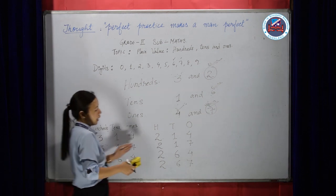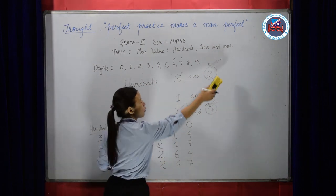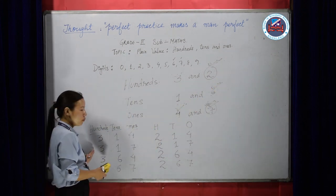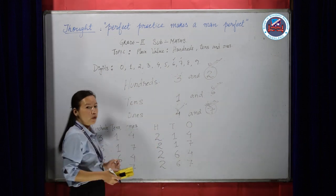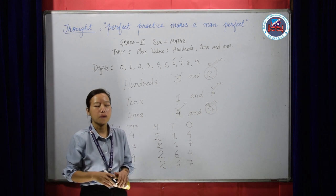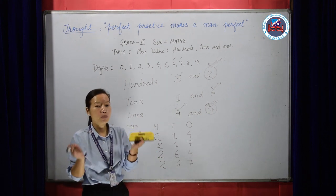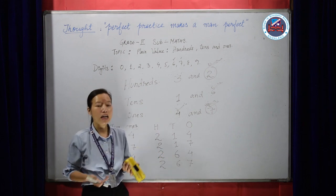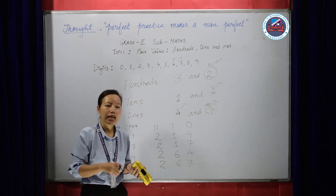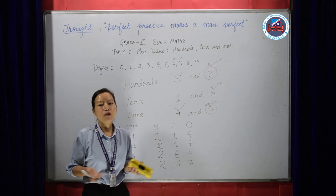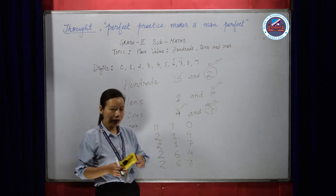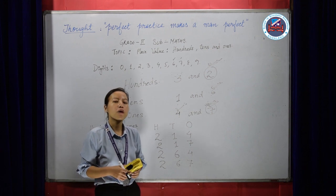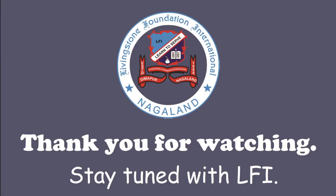I've already used 3 and 2 in the 100s place, so there are no more hundreds digits and I'll stop here. This is how we form as many 3-digit numbers using the given digits. So, till now what we have learned is all about place value — how to find the difference between place and place value, how to count on and back in the 1s, 10s, and 100s, and how to make as many 3-digit numbers using given digits. I want you all to start practicing with some questions from the books. Until then, stay home, stay safe. See you in the next video. Thank you.